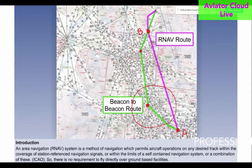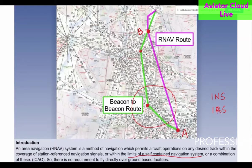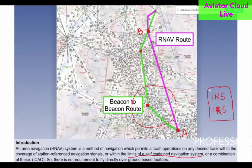Or it has to be within the limits of a self-contained navigation system. Examples of self-contained navigation systems are INS (Inertial Navigation System) and IRS (Inertial Reference System). These systems help determine the position of the aircraft without relying on any external source such as GPS or any VOR. The aircraft is able to determine its own position continuously as it flies. All modern aircraft use INS and IRS systems.